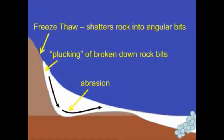Originally we get freeze-thaw occurring up in the upper parts of the mountain. This physical weathering process creates shattering and sharp angular fragments. Further, plucking — as the ice moves downslope — takes those shattered angular fragments and removes them. This erosion brings broken-down rock bits to the bottom, where smoothing occurs as bits of rock rub against each other. Eventually the glacier moves all this broken-down sediment to the front, where deposition collects at the end.